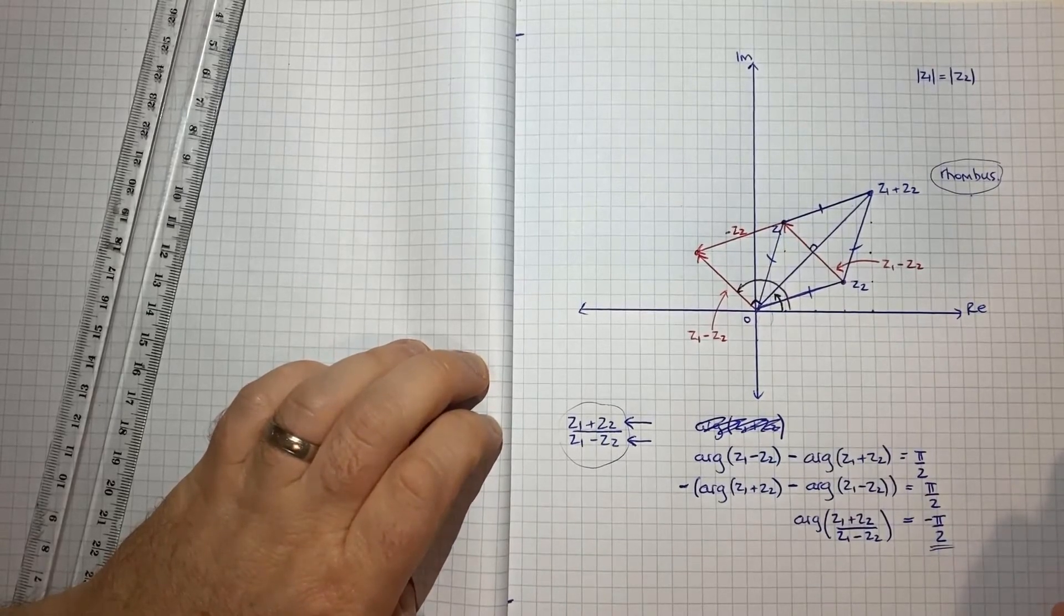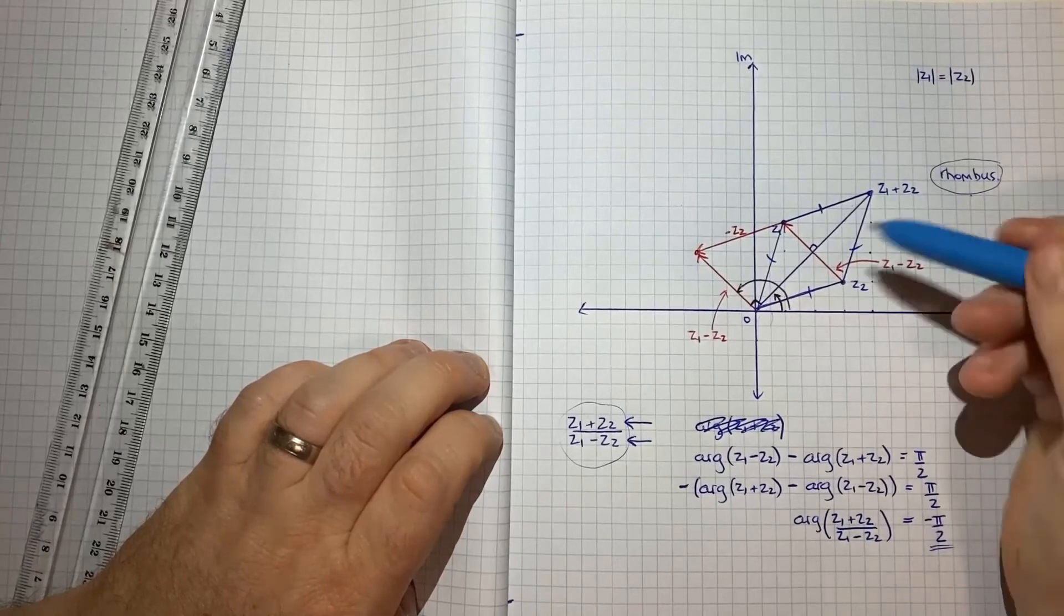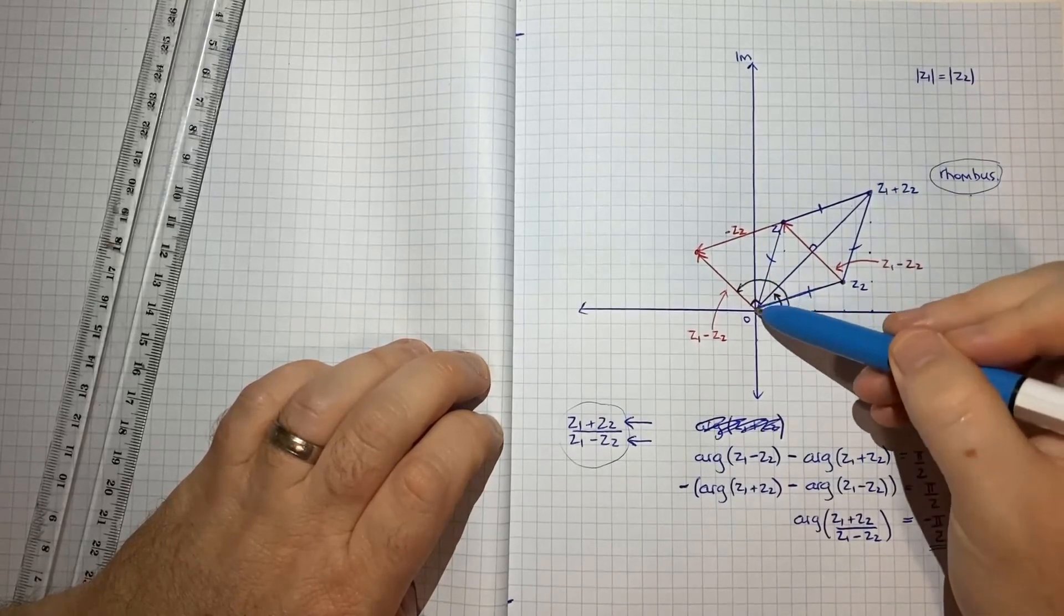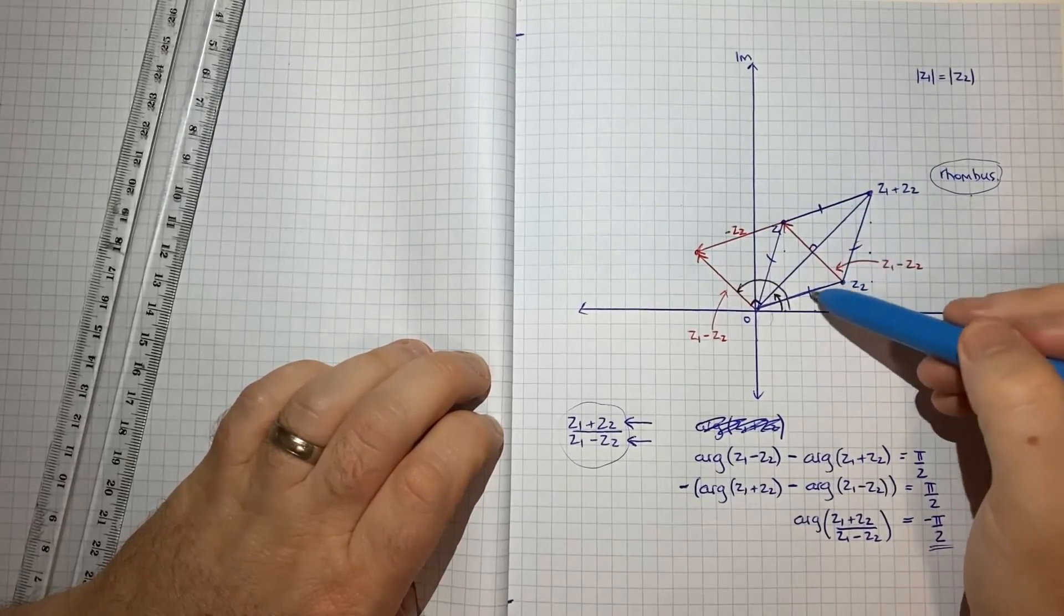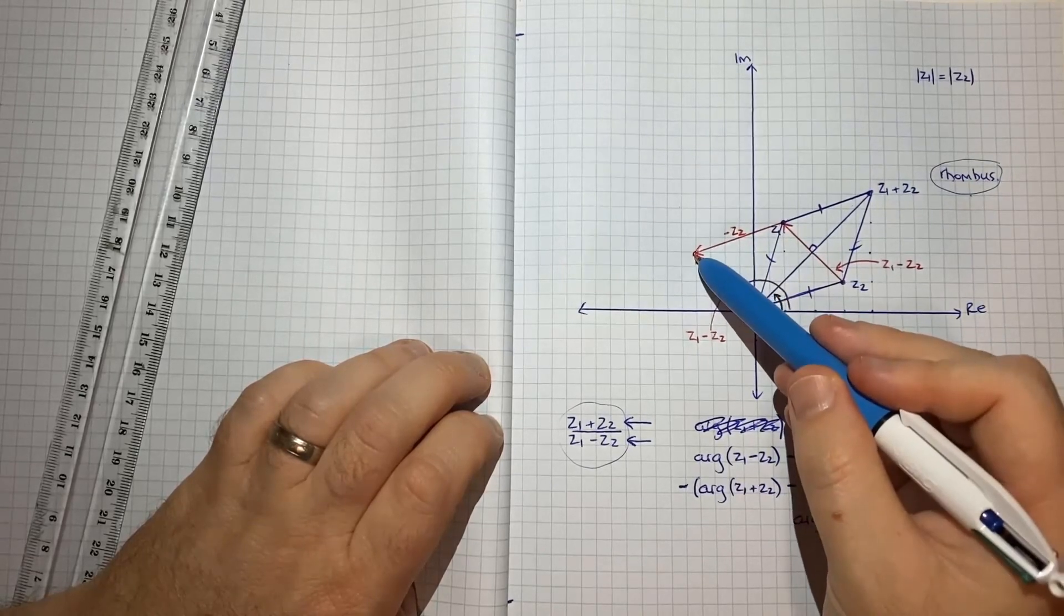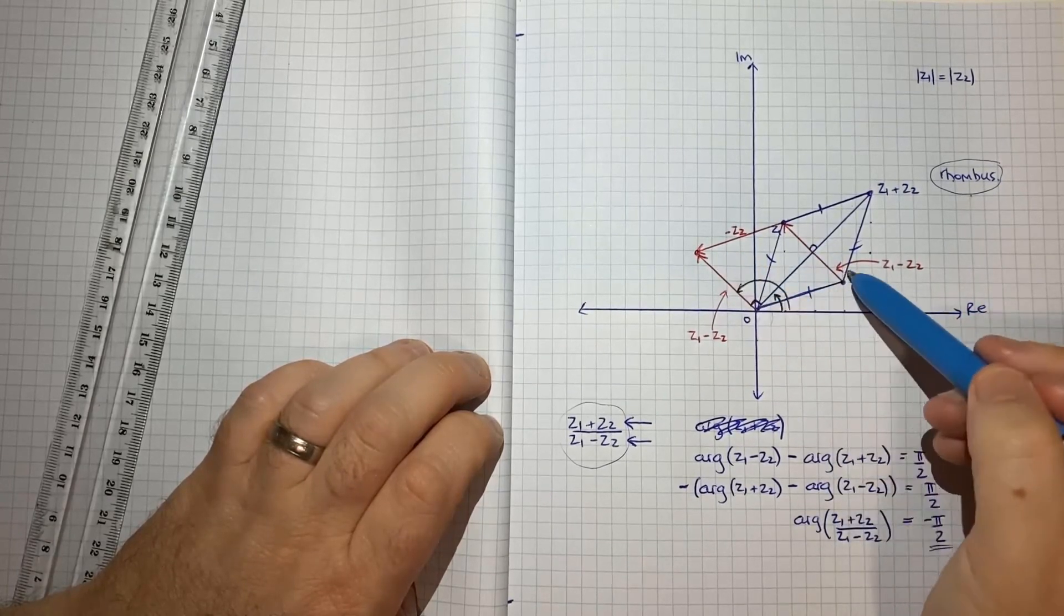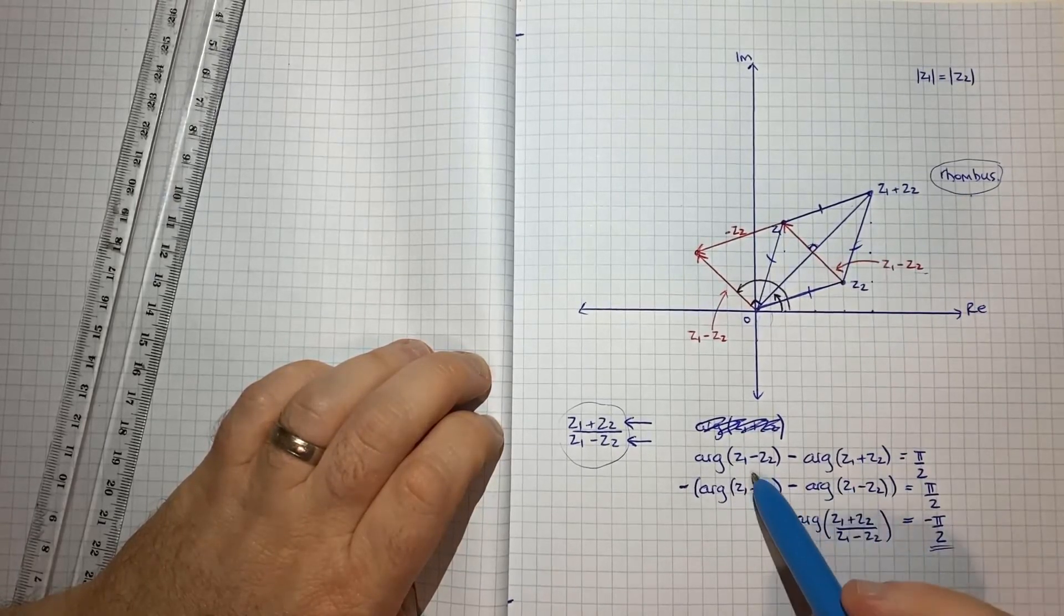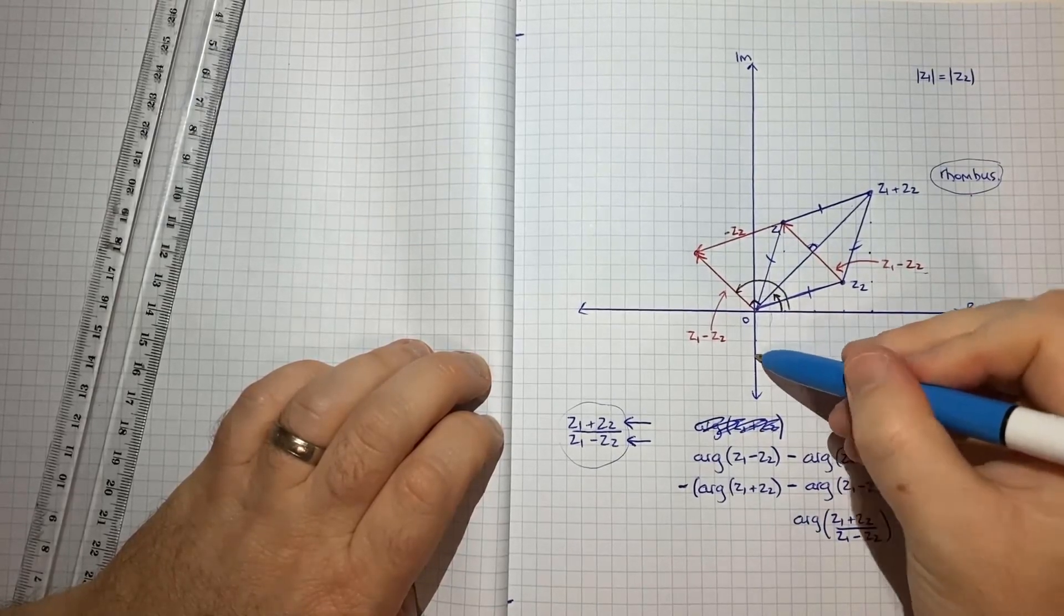So I think that is the proof geometrically. It all started by plotting the two points and then plotting z1 plus z2, coming to the conclusion basically using vector thinking that this is going to be a rhombus, then plotting z1 minus z2, and then concluding that these two parallel lines must be the same vector. They must then intersect at 90, and from there you can play around with your arguments and show that it's going to fall exactly on the imaginary axis.